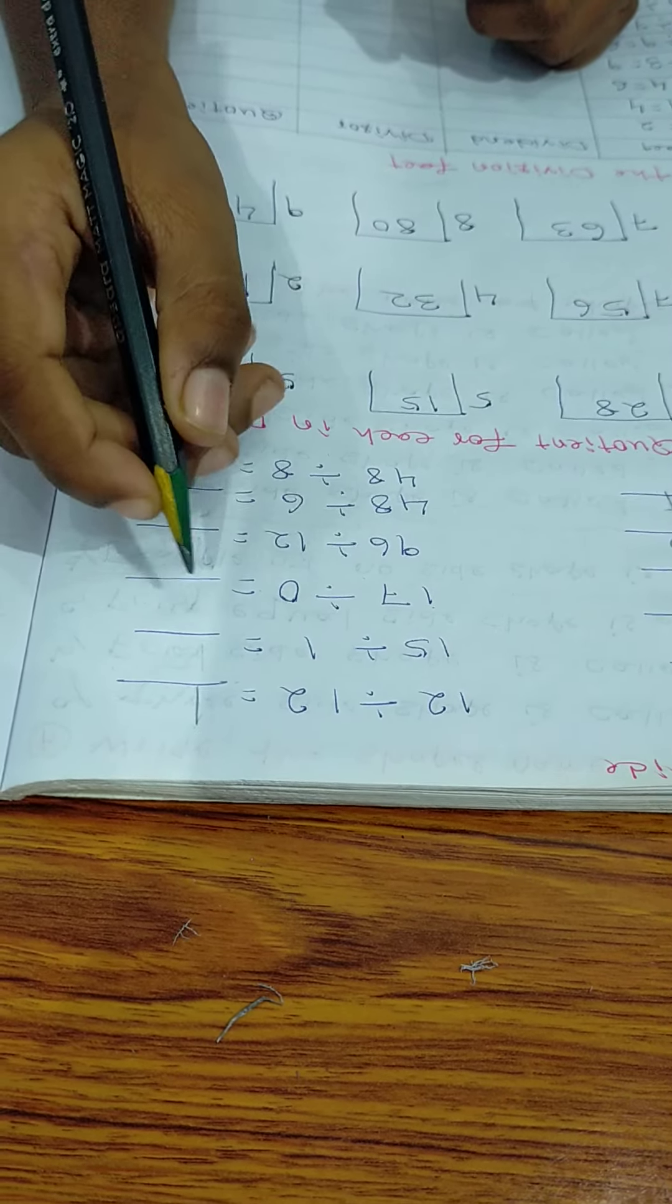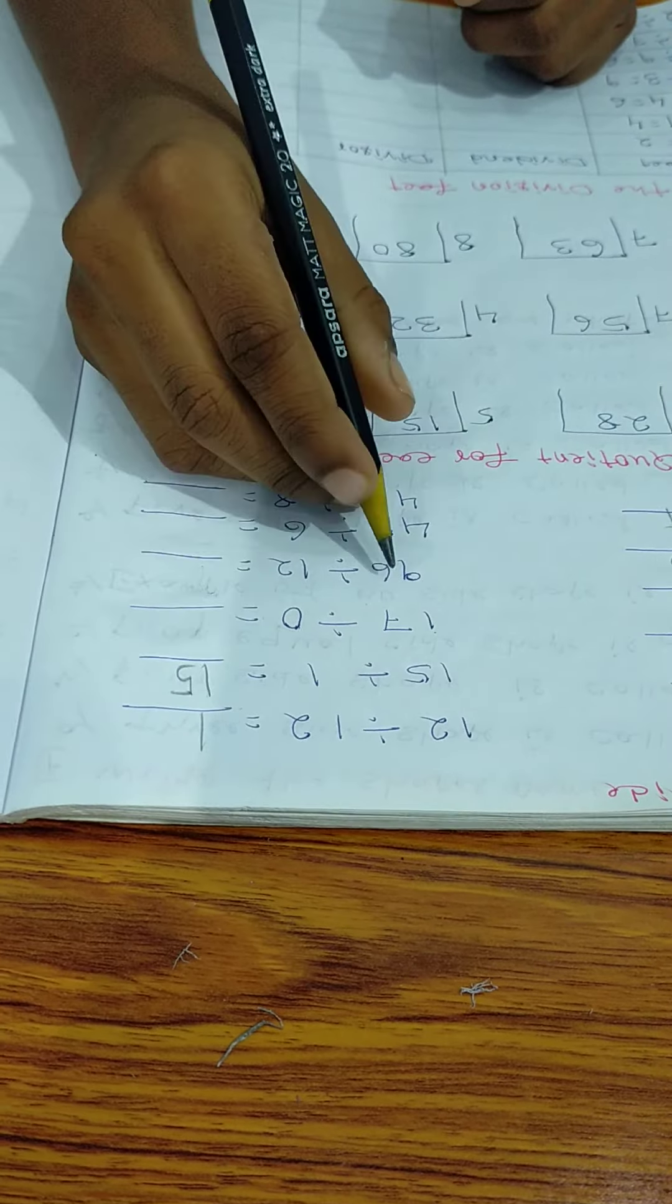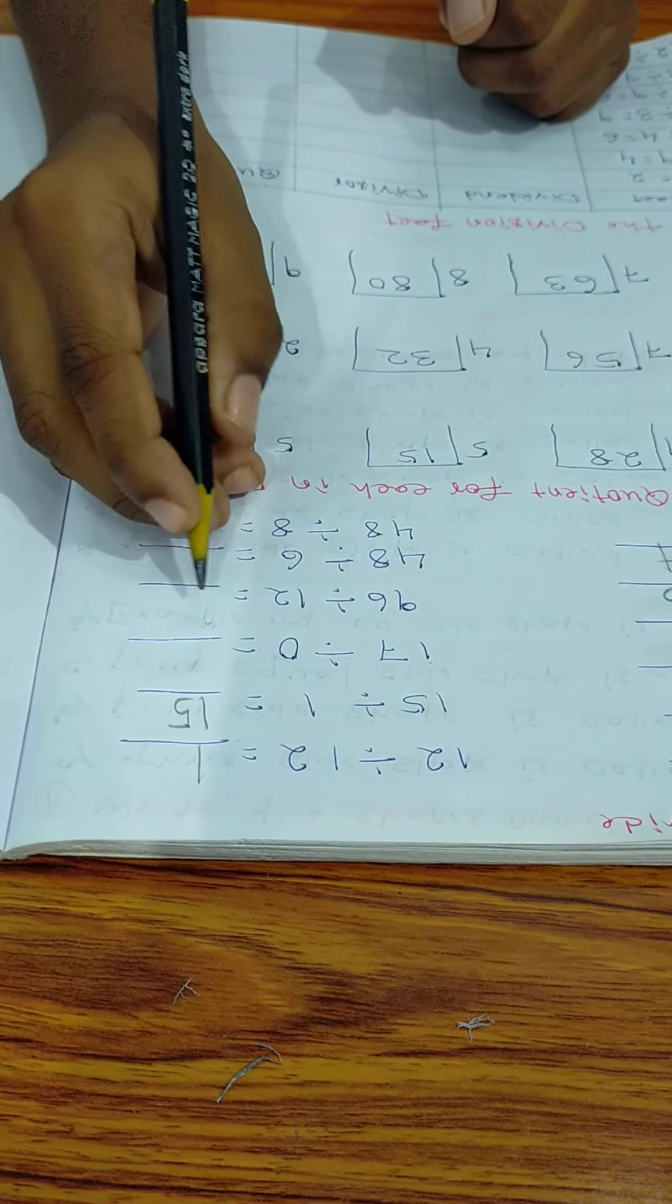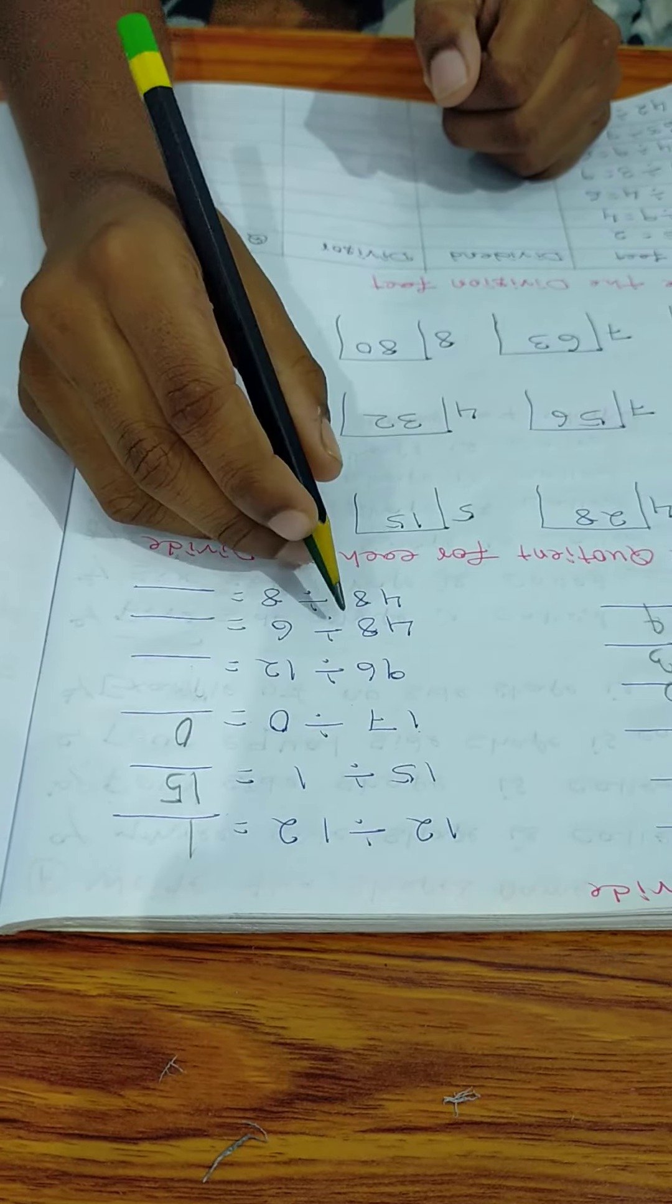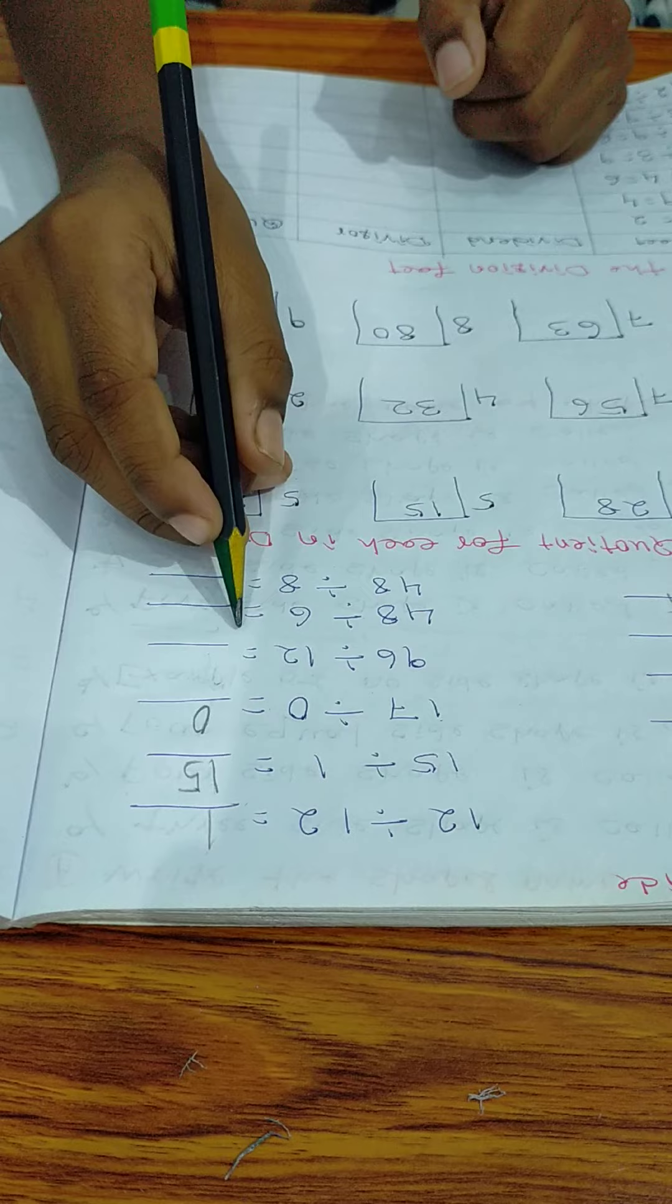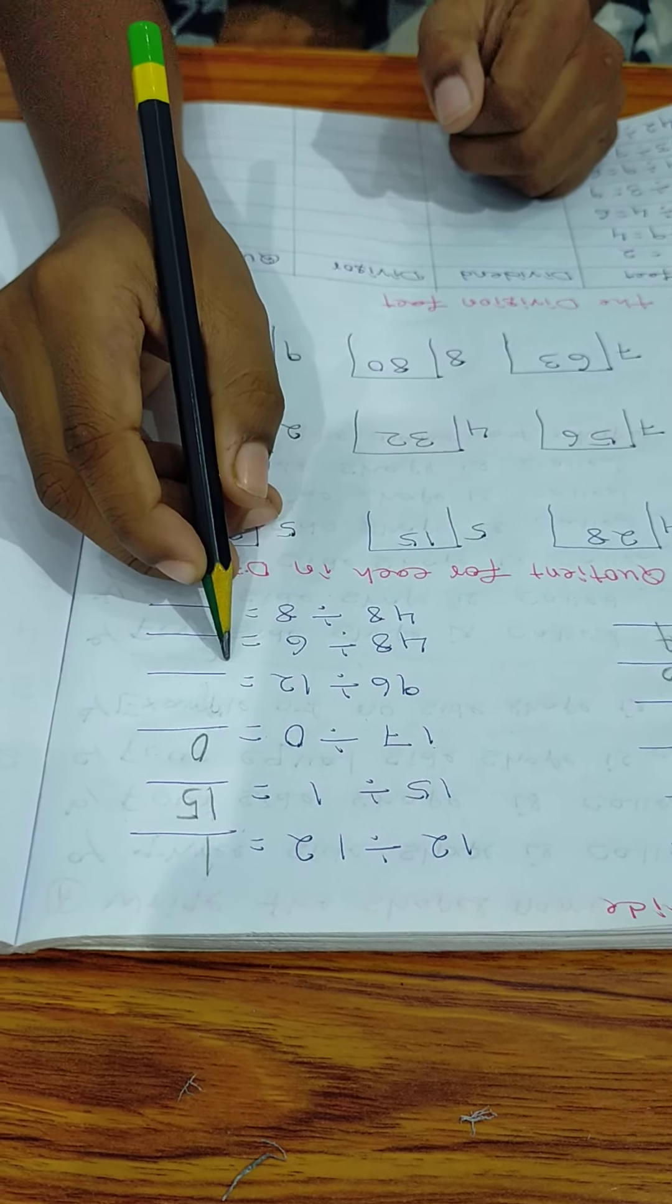12 divide 12 is equal 1. 15 divide 1 is equal 15. 17 divide 0 is equal 0.